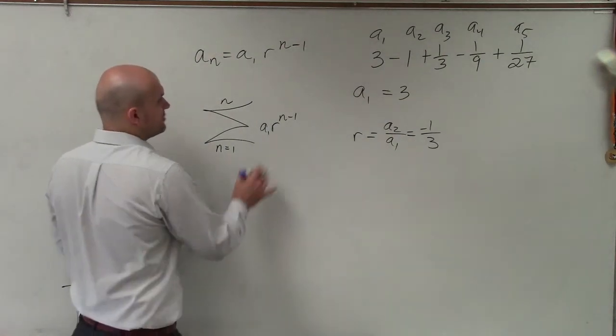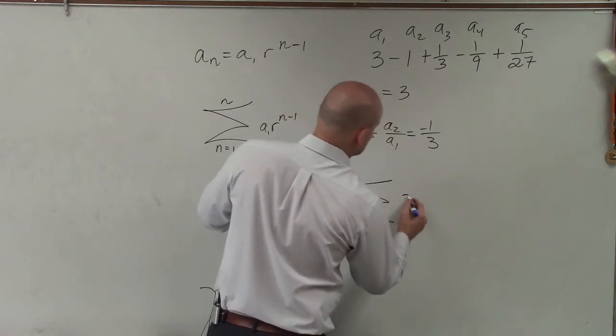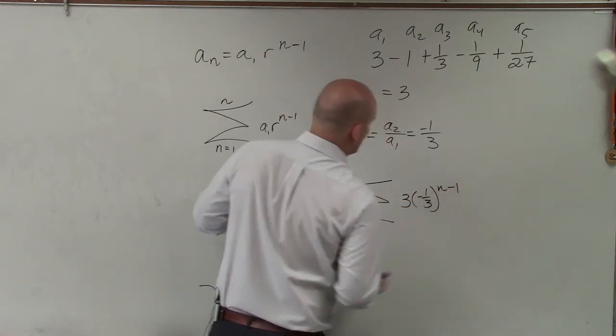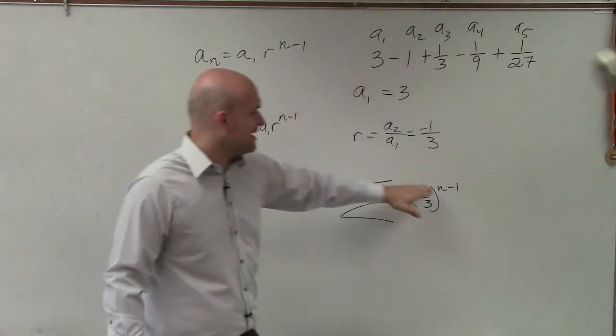Perfect. So now, to write this in sigma notation, we know the rule, where a sub 1 equals 3 times negative 1/3 raised to the n minus 1. Since a sub 1 is starting up here in our general rule, we're going to have n minus 1. Therefore, we're going to start at n equals 1.